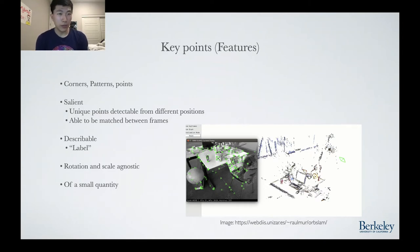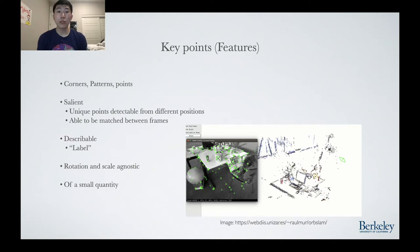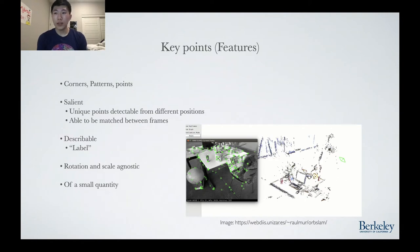Key points need to be describable, meaning each key point needs a unique label. Creating this label is what transforms the point from a key point to a feature. One desirable quality is that the key points should be rotation and scale agnostic, as rotating the camera or moving farther or closer from the object should not influence whether a key point is detected and matched to itself in a previous frame. Lastly, they need to be of relatively small quantity, as brute force key point matching requires O(n²) time, checking each key point in a new frame against every key point in a previous frame.